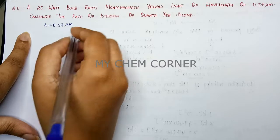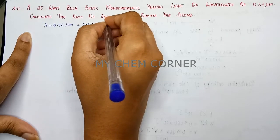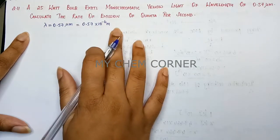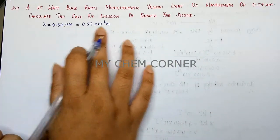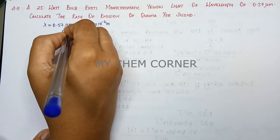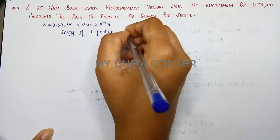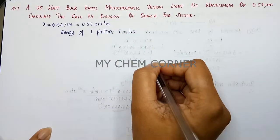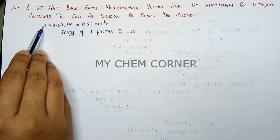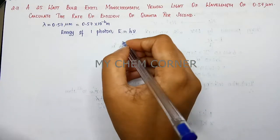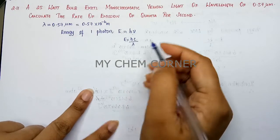This needs to be converted to meters: 0.57 into 10 to the power minus 6 meter. Now we have to find the energy of one photon. Energy of one photon E is equal to h-nu, but we don't have the nu value. Instead, nu can be expressed in terms of wavelength, so we rewrite this as E equals hc by lambda.